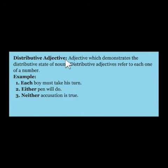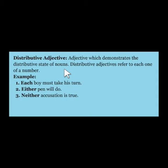Next is the distributive adjective, which demonstrates a distributive state of nouns. A distributive adjective refers to each one of a number — for example, a group of 40 students. We use distributive adjectives to refer to members of a group individually rather than collectively.